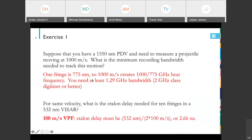The first exercise was very much a plug and chug type of ordeal where you say suppose you have a 1550 nanometer PDV and you want to measure a projectile moving at a kilometer per second. What's the minimum recording bandwidth you would need to track this motion? Well, in PDV every fringe of signal is a 775 nanometer displacement. So if you're operating a thousand meters per second, 1000 over 775 gigahertz is your beat frequency. What that means is you need a 1.29 gigahertz bandwidth to just cover that. So you're looking at sort of a two gigahertz class digitizer or better.